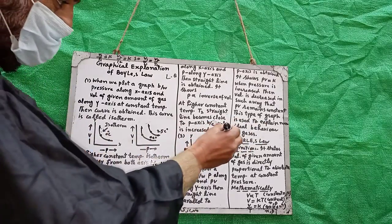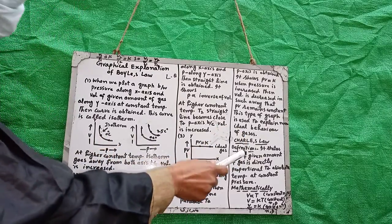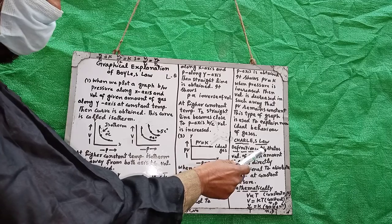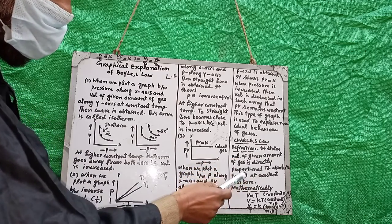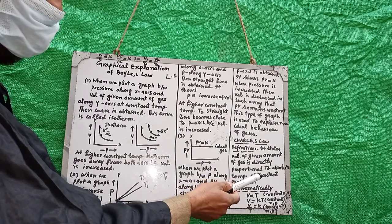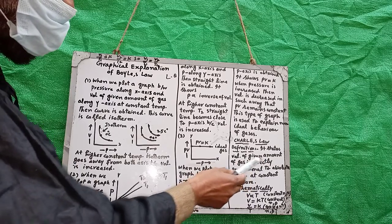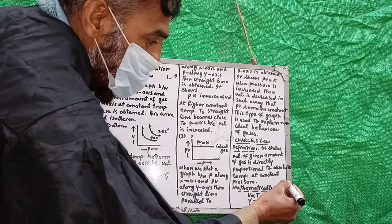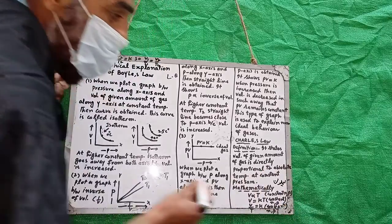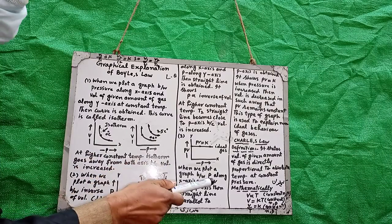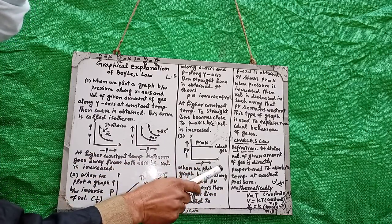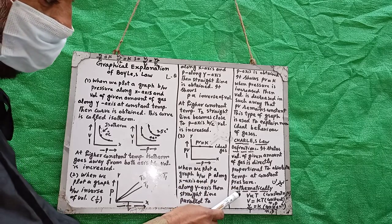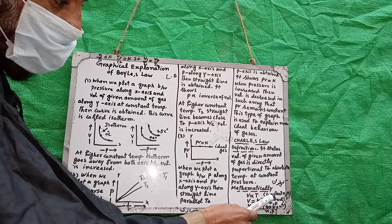Now the next law is Charles' Law. When you increase temperature, volume increases and the piston moves upward. It states that the volume of the amount of gas is directly proportional to absolute temperature — that is, temperature in Kelvin — at constant pressure. Gas laws are followed in Kelvin (absolute temperature), not in Celsius or Fahrenheit.